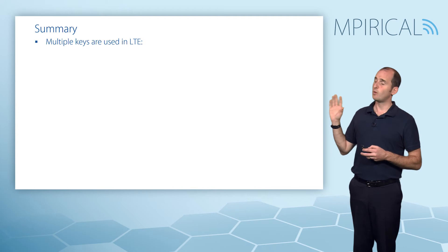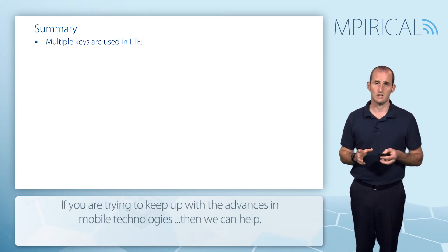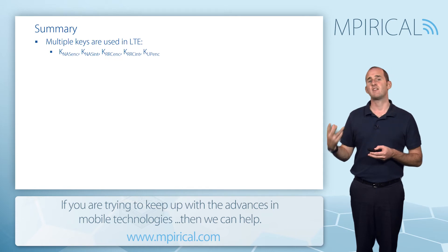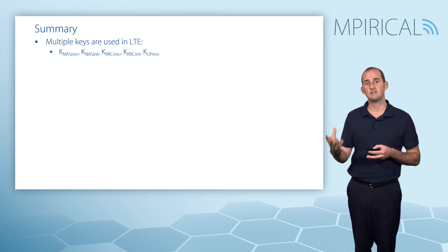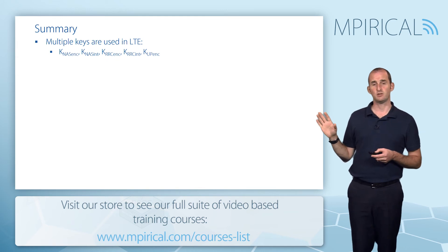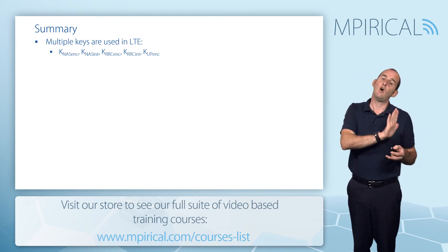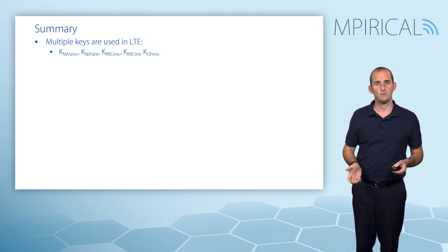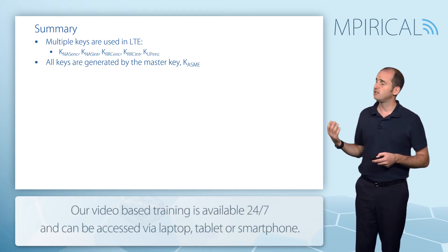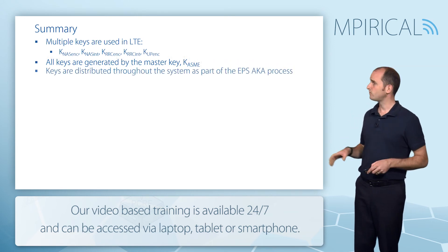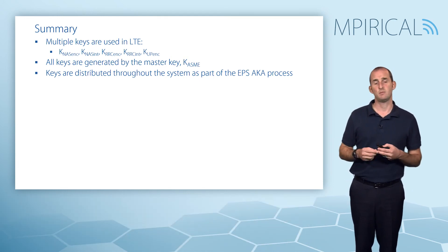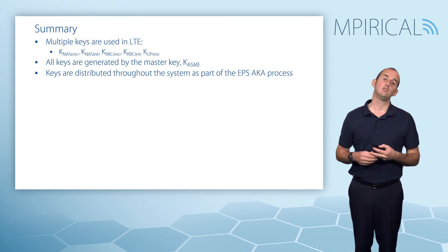In summary, multiple keys are used in LTE: keys for NAS security (encryption and integrity checking), keys for RRC security (encryption and integrity checking), and a final key for user plane encryption. These are symmetrical keys, so whatever is generated in the network must also be stored on the device. All five keys and KE Node B are generated from the master key KASME, and they are distributed throughout the system as part of the EPS authentication and key agreement procedure, which in turn is part of the overall attach process.